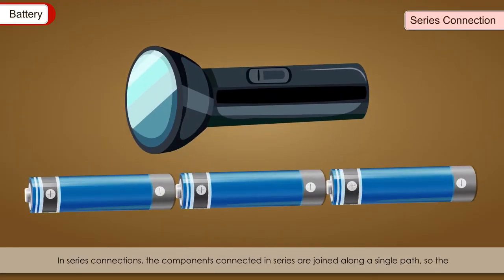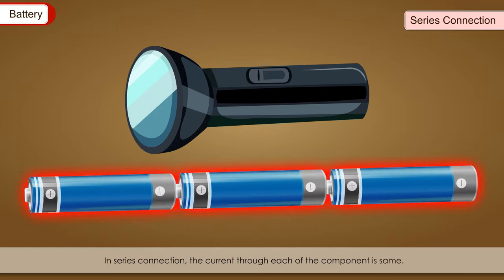Series connection: In series connection, the components connected in series are joined along a single path. So, same current flows through all the components. In series connection, the current through each of the components is same. In this, every device must work for the circuit to be complete. If a bulb breaks out in series connection, circuit breaks.